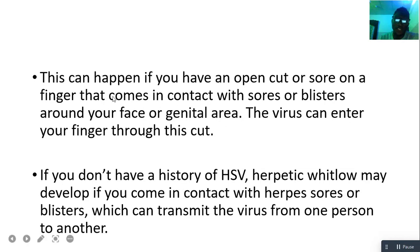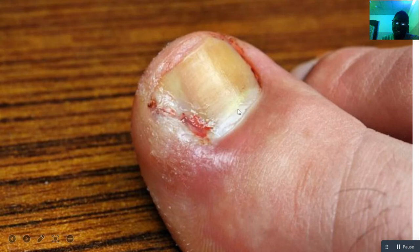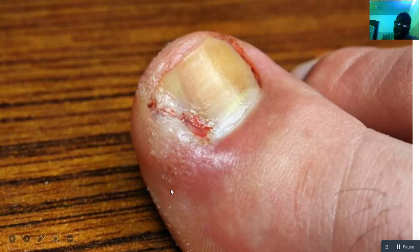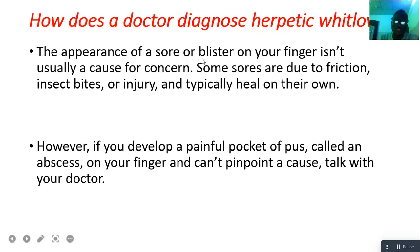This can happen if you have an open cut or a sore on a finger that comes in contact with the sores or blisters around your face or genital area — the virus can enter your finger through that cut. If you don't have a history of HSV, herpetic whitlow may develop if you come in contact with herpes sores or blisters, which can transmit the virus from one person to another. This image shows the sore at the tip of the finger — you can see inflammation, and the whitish area is due to accumulation of pus.